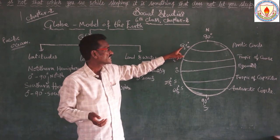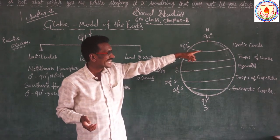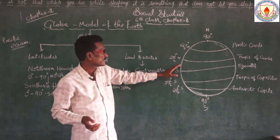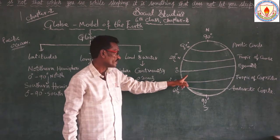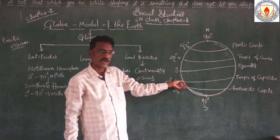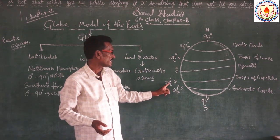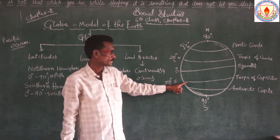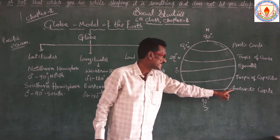Another important latitude: 66 degrees north latitude is called the Arctic Circle. These are all called north latitudes. The latitudes drawn on the south part are called south latitudes. 23 degrees south latitude is called the Tropic of Capricorn. And 66 degrees south latitude is called the Antarctic Circle. These are the important circles.